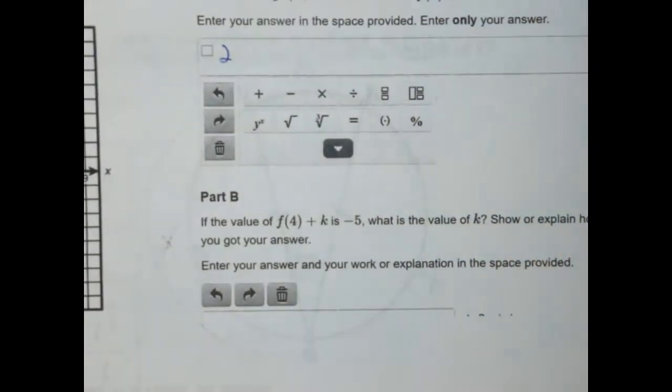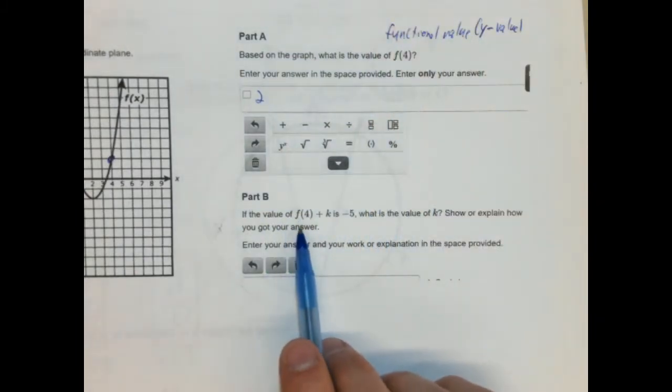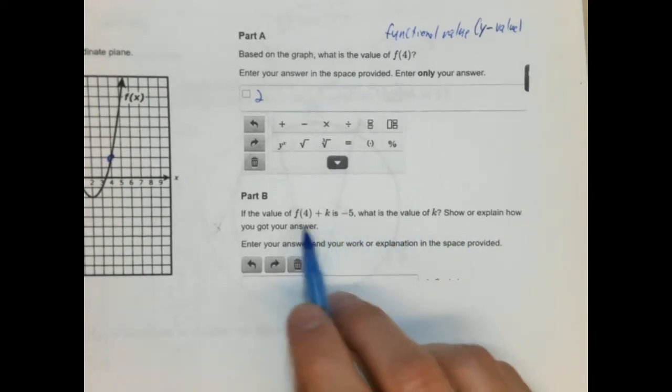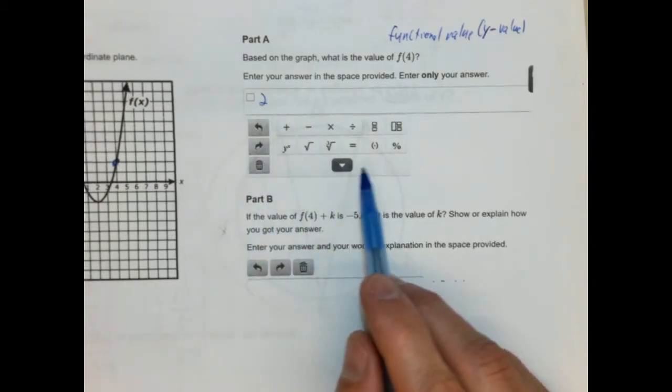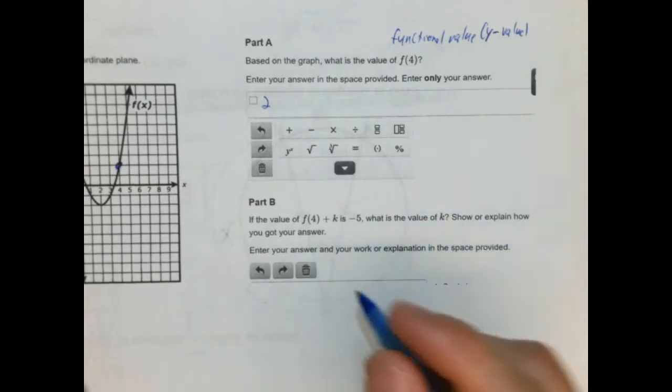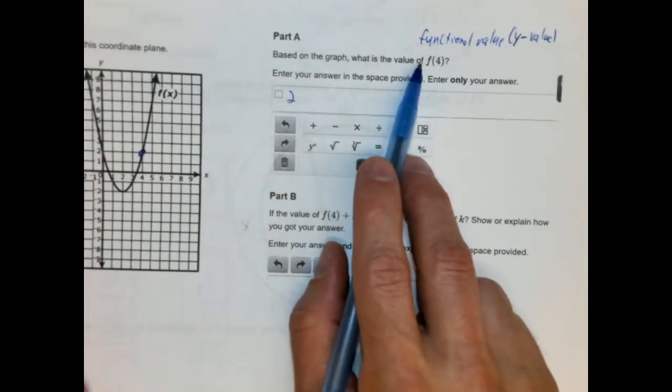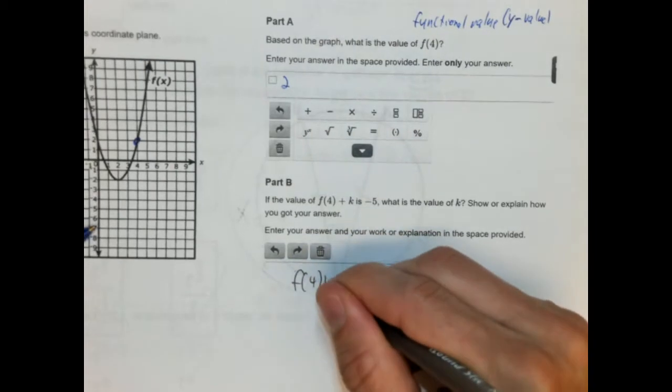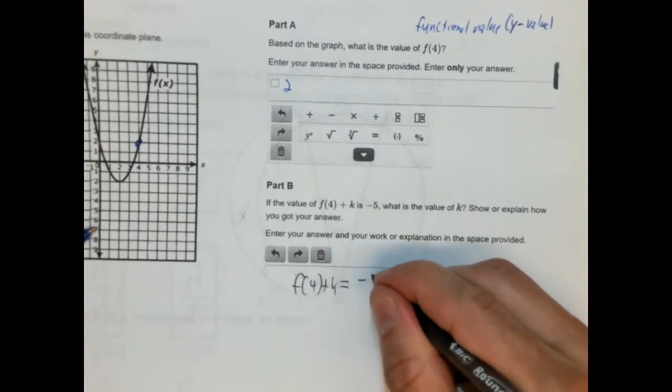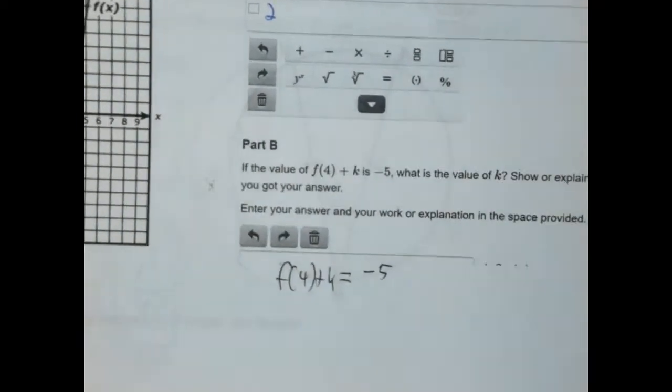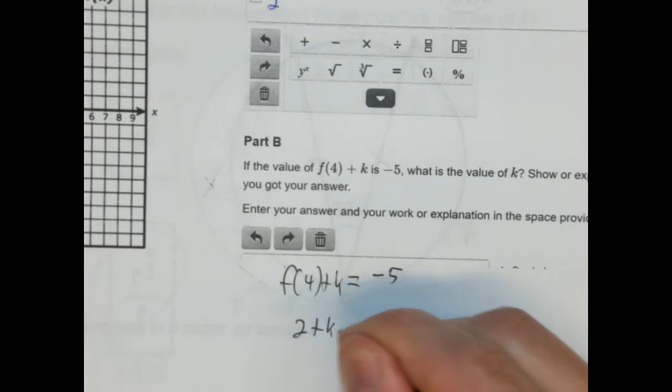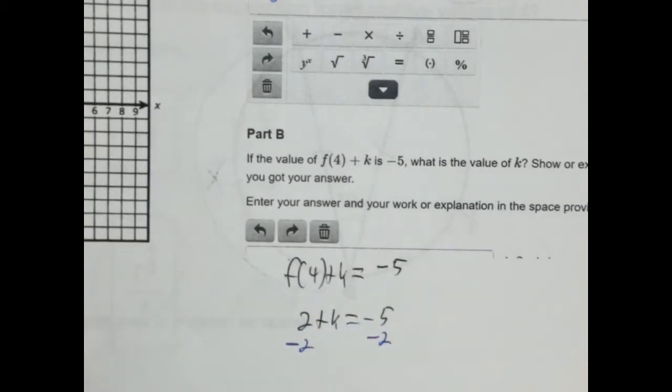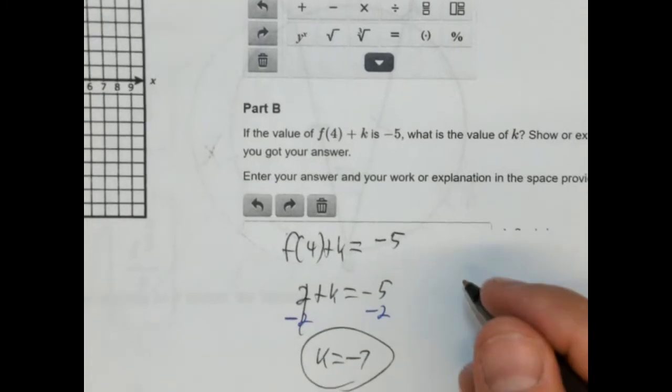Here, they're going to use what we just figured out and then force us to use it algebraically. So it says if the value of f(4) + k is -5, what is the value of k? So we have to set up an algebraic equation here. f(4), we know what that is. We know that's 2. You would not be able to solve part B unless you also got part A correct. So f(4) + k equals -5. Well, we know what f(4) is. f(4) is 2. So we're going to write 2 + k = -5. We're going to use our inverse operations. We're going to subtract 2 from both sides and k will be equal to -7.